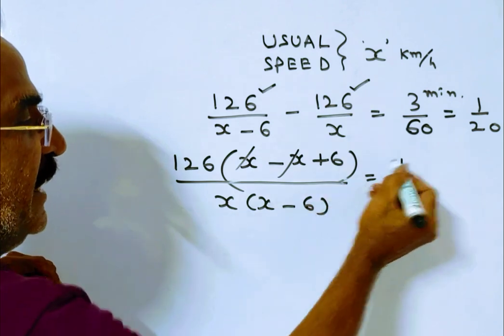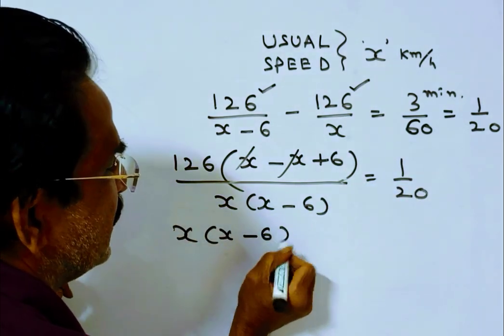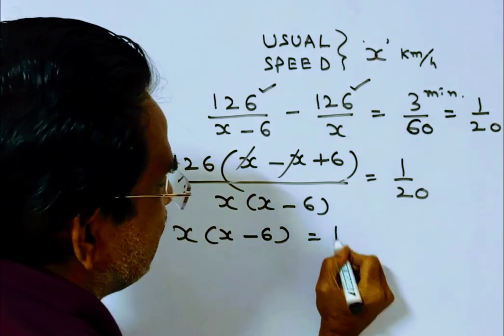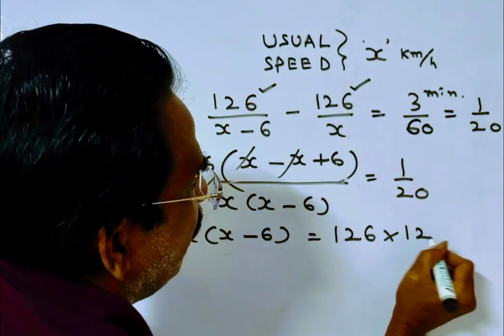x gets cancelled. x into x minus 6 is equal to 126 into 20 into 6, 120.